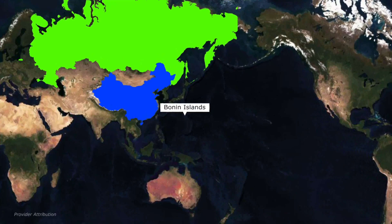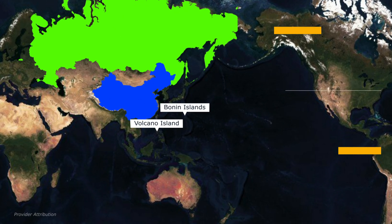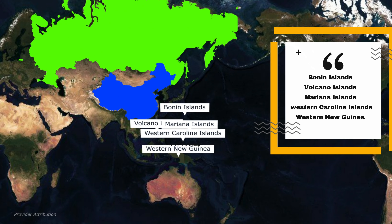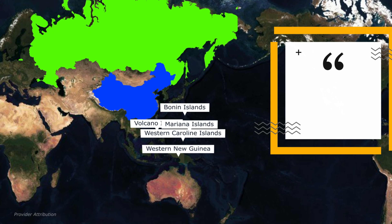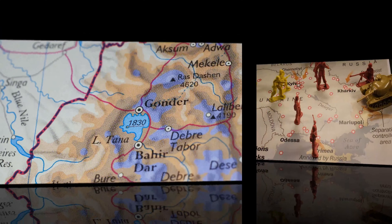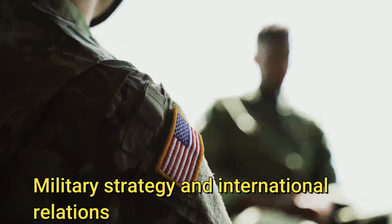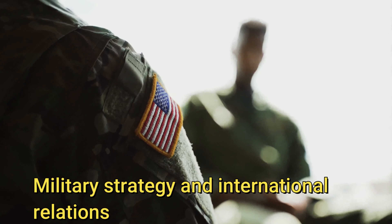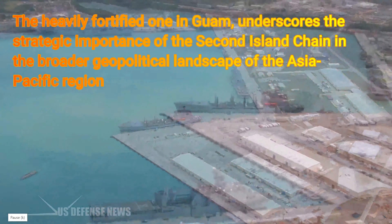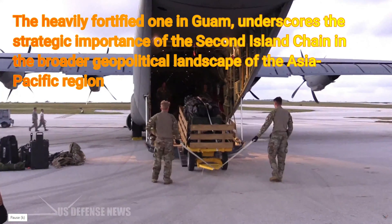The second island chain is formed by Japan's Bonin Islands and Volcano Islands, along with the Mariana Islands — with a special mention of Guam, an important US military base — and the Western Caroline Islands including Yap and Palau, extending to Western New Guinea. This island chain essentially acts as the eastern maritime boundary of the Philippine Sea. Its significance lies in its role as a strategic defense line for the United States, situated in the middle portion of the West Pacific. The presence of the heavily fortified military base in Guam underscores the strategic importance of the second island chain in the broader geopolitical landscape of the Asia-Pacific region.